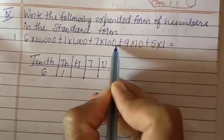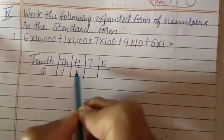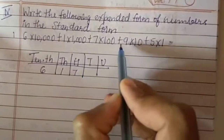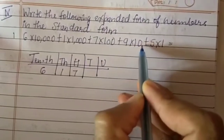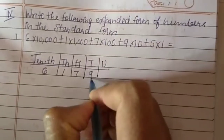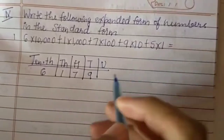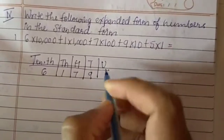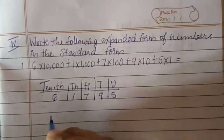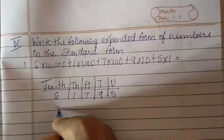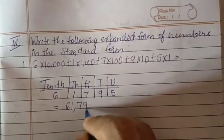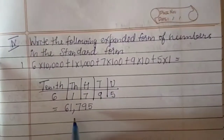7 into 100 is 700 — it will come under the 100's place, so I am writing 700. Plus 9 into 10 is 90 — it will come under the 10's place, so I am writing 90. And 5 into 1 is 5 — it will come under the unit place. So the answer in standard form is 61,795.